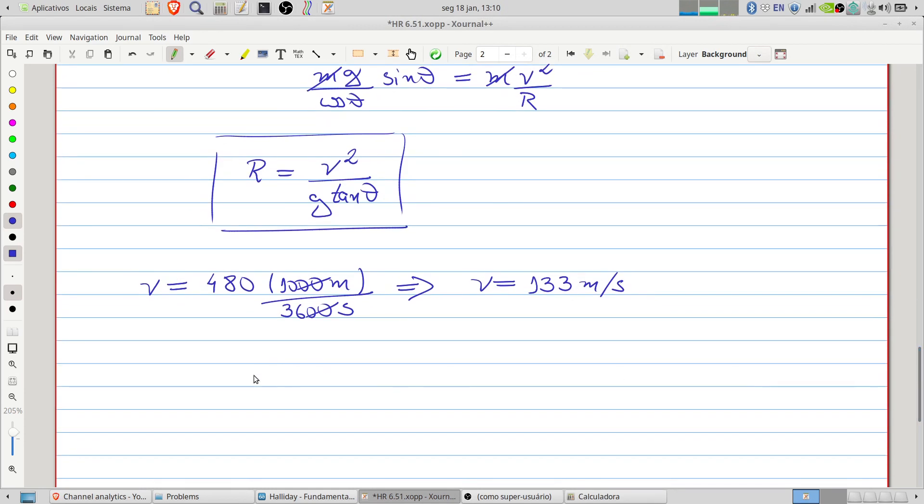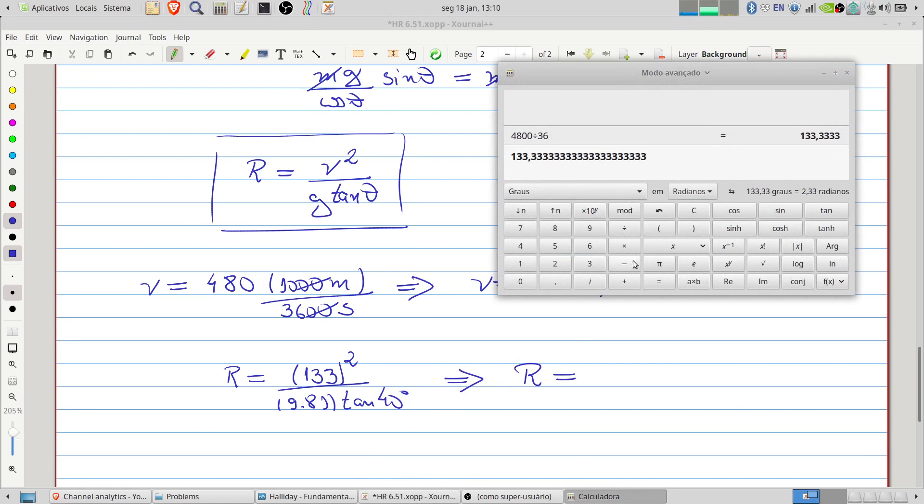Therefore the radius will be 113 squared divided by 9.81 times the tangent of 40 degrees. The radius will be, let's see...